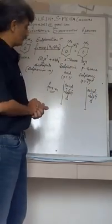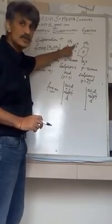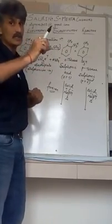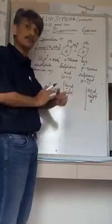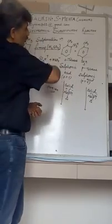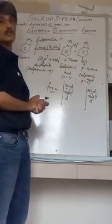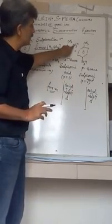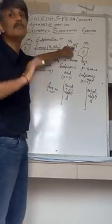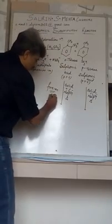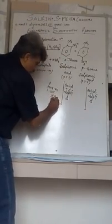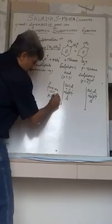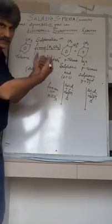Now this SO3H bonded to carbon, as you know sulfur is highly electronegative compared to carbon, so it will pull away the electron of carbon towards it. Carbon will lose the electron and as a result SO3H will attain a minus sign. So I will write over here SO3H with a minus sign because it has taken away the electron of carbon.